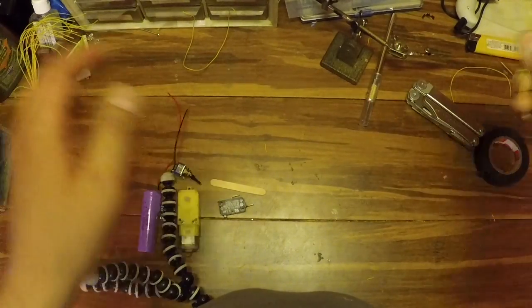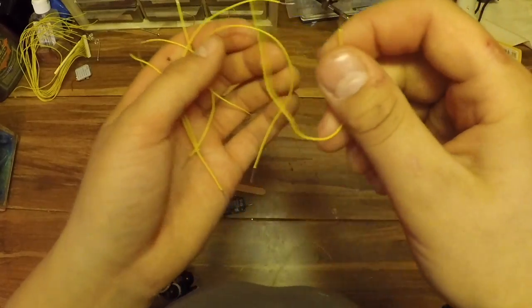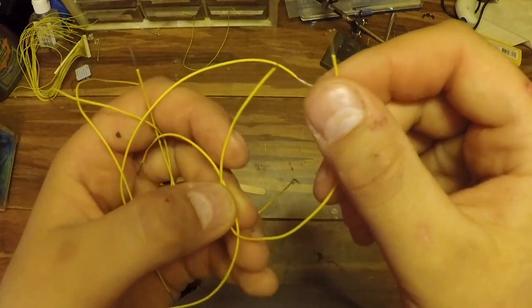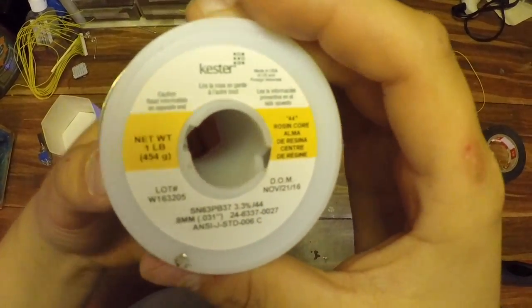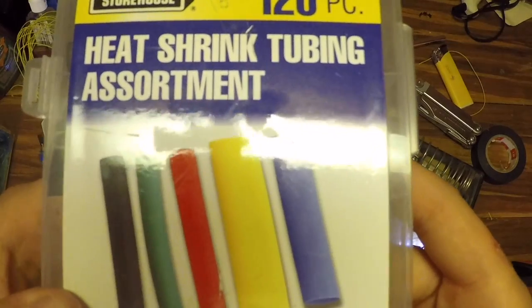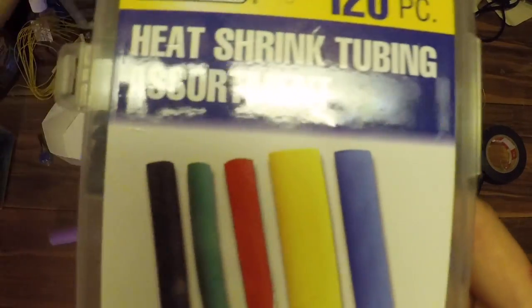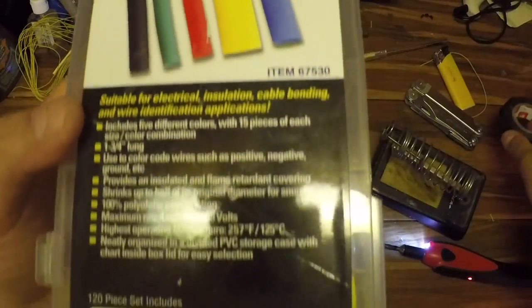Then you're going to want some 22 gauge wire. You're going to want about eight pieces that are six inches long and you want both sides stripped. Then you're going to want some solder. And heat shrink tubing is optional. You don't have to use it. You could use electrical tape or you could use hot glue which is what I used.